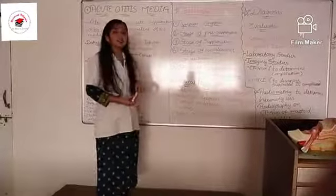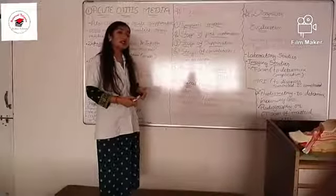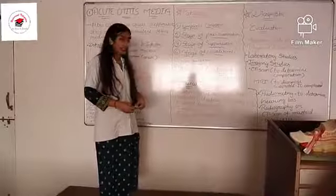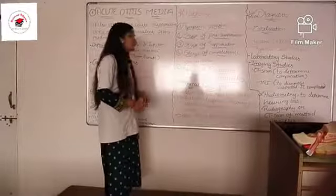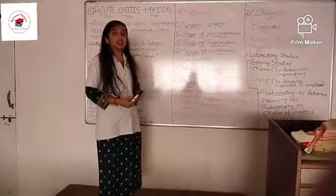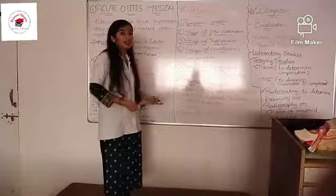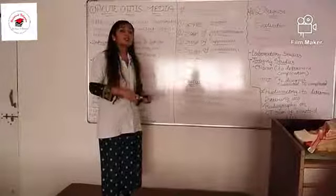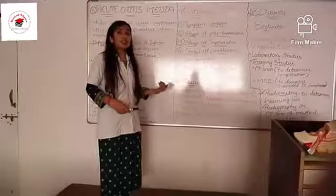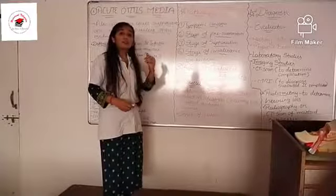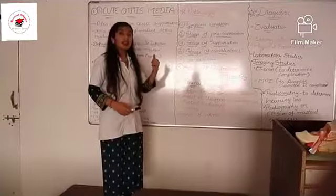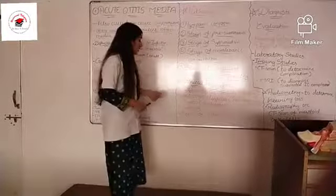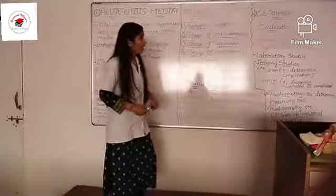The first clinical feature is sudden severe ear pain, which we can also call otalgia. The second is conductive hearing loss. Then buzzing or drumming sensation in the ear, then mastoid tenderness — because if infection spreads to the mastoid air cells, the part becomes inflamed and tenderness increases. Then a sense of fullness in the ear.